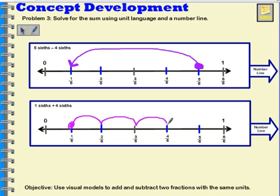And I'm going to jump 4 sixths. So that would be 1 sixth, 2 sixths, 3 sixths, 4 sixths. So here is where I will end up, which is 5 sixths.